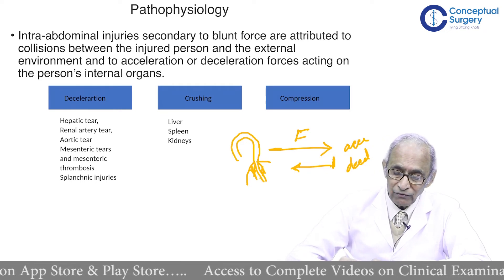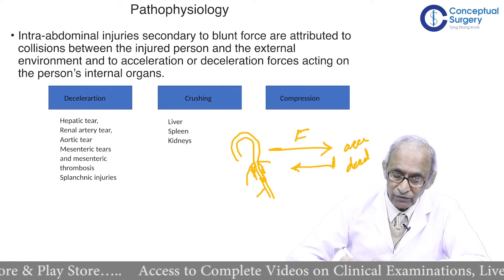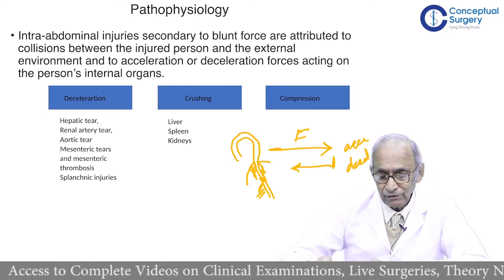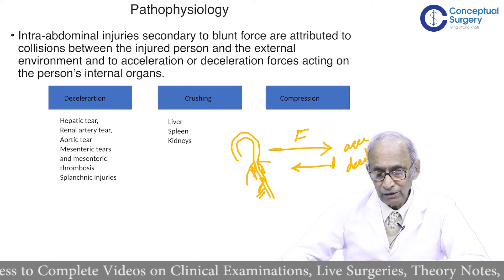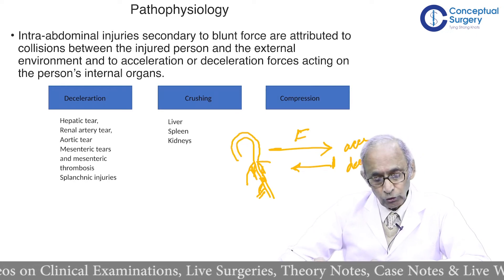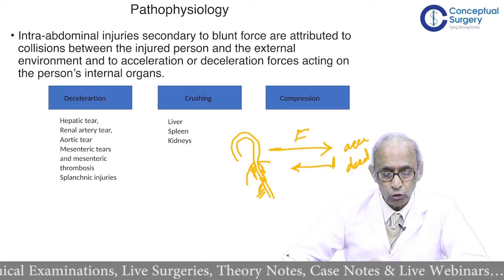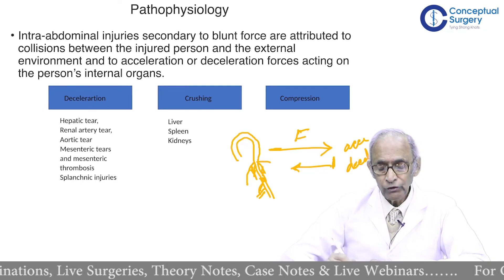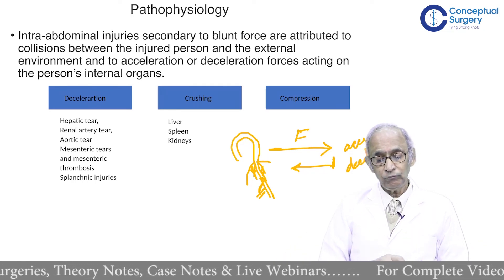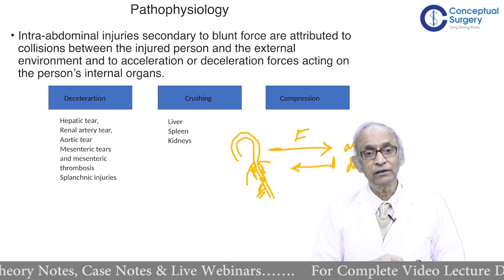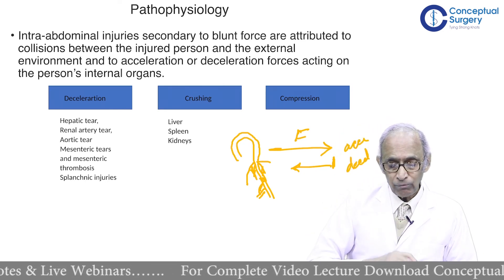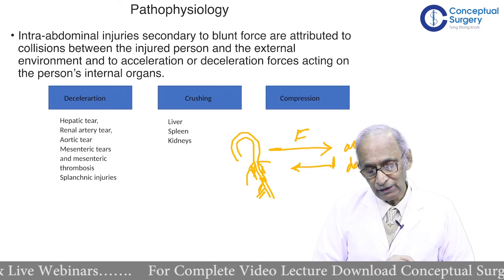A similar thing will happen to the vessels in the abdomen — for example, the mesenteric vessels. With forward-backward force, there is a tendency to tear and also a tendency to thrombose. These are the kinds of forces that operate upon the various organs in the abdomen. This covers acceleration and deceleration.